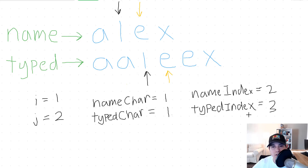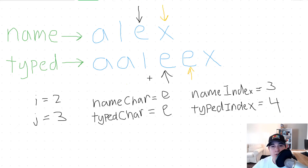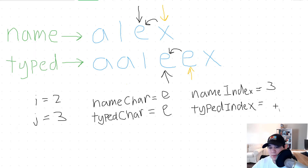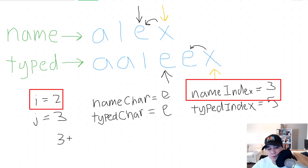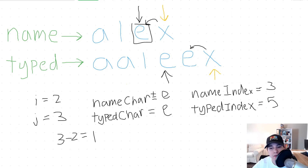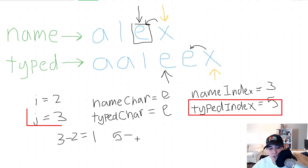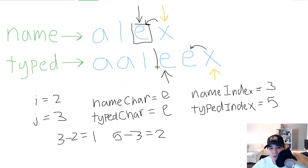We assign name index and typed index equal to I and J. The current character is now E. Looking backwards on the name string, the characters are not the same, so we don't increase name index. On the typed string, they are equal, so we increase typed index to index five. Looking backwards again, the characters are not the same, so we stop iterating. Name index minus I: three minus two equals one — the single E. Typed index minus J: five minus three equals two — the two E's. Since we have more E's in typed than in name, we're still okay.